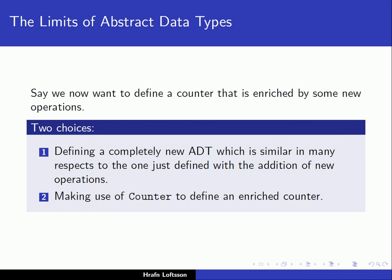Now let's say that we want to define a counter that is enriched by some new operations. We really have two choices: we can define a completely new abstract data type which is similar in many respects to the one we just defined but has new operations added, or we can somehow make use of counter to define an enriched counter.